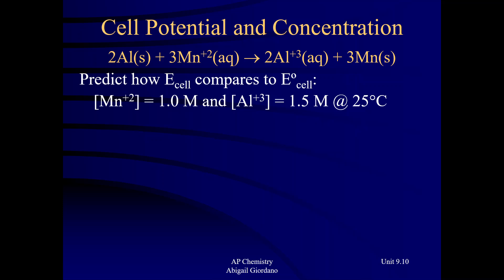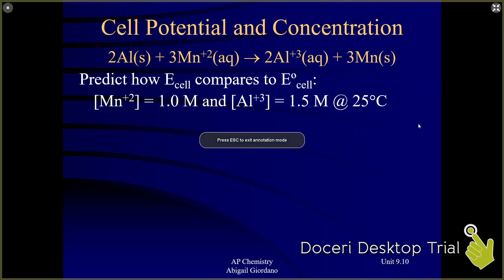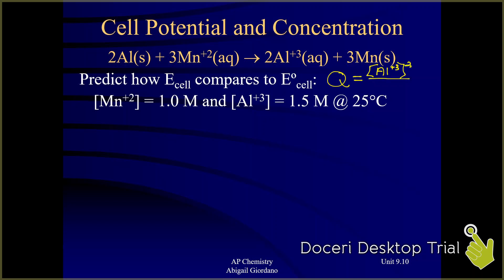What is going to happen to this galvanic cell if the manganese ion molarity is still at one — unchanged — but the aluminum ion concentration is no longer at standard state, it's at 1.5 molar? We are still at 25 degrees Celsius. First, before any number crunching, I'm going to write out the Q expression for this reaction. Remember, solids and liquids are not included. The manganese ion is in the denominator raised to the third power.